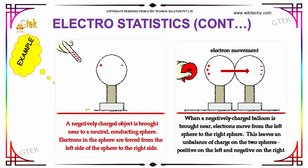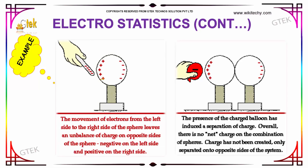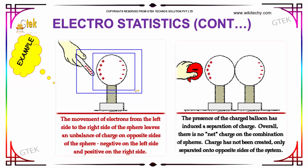This example explains a negatively charged object being brought near a neutral conducting sphere. The electrons in the sphere are forced from the left side of the sphere to the right side of the sphere. The movement of electrons from the left side leaves an unbalanced charge on the opposite side of the same sphere.